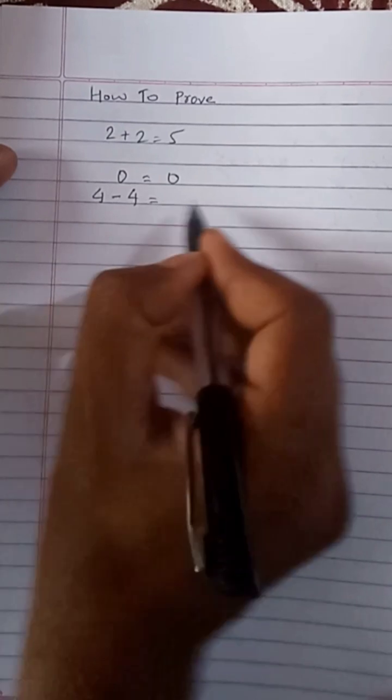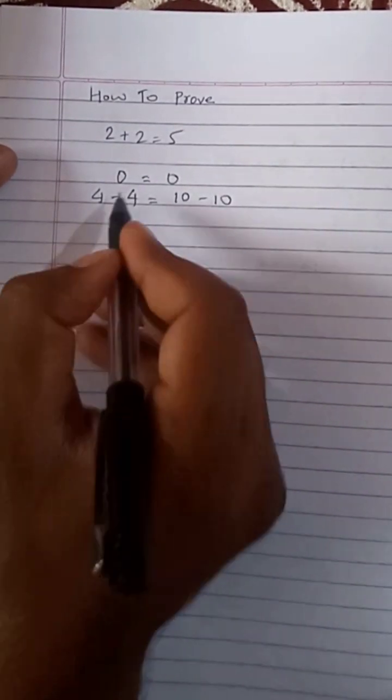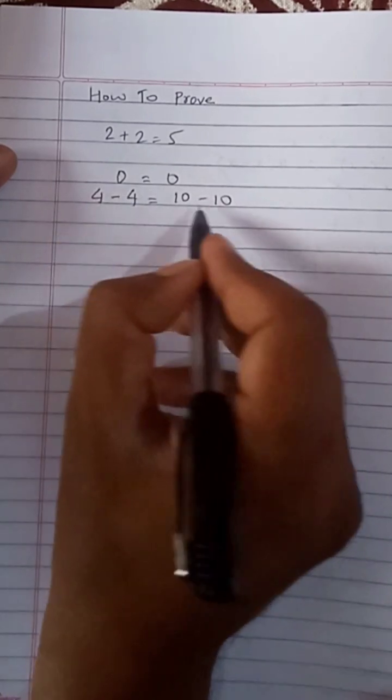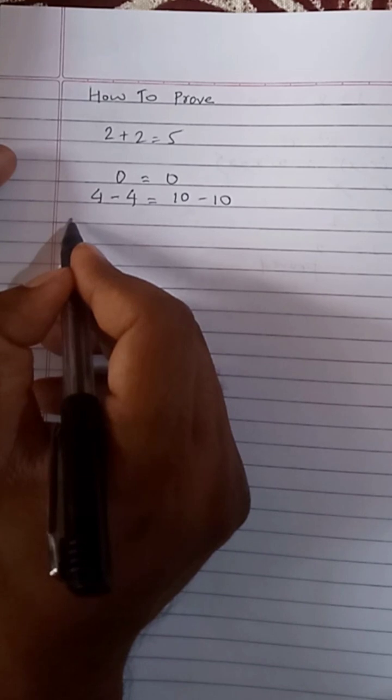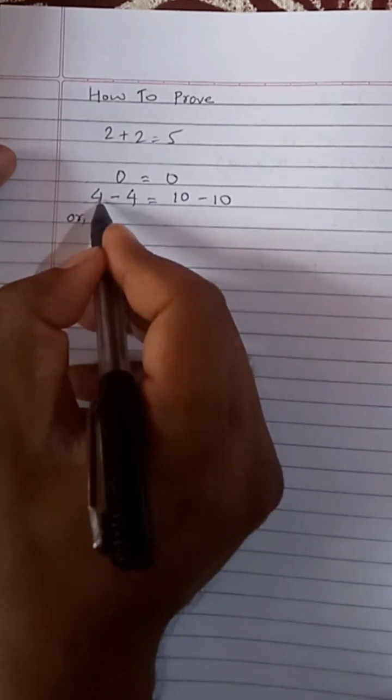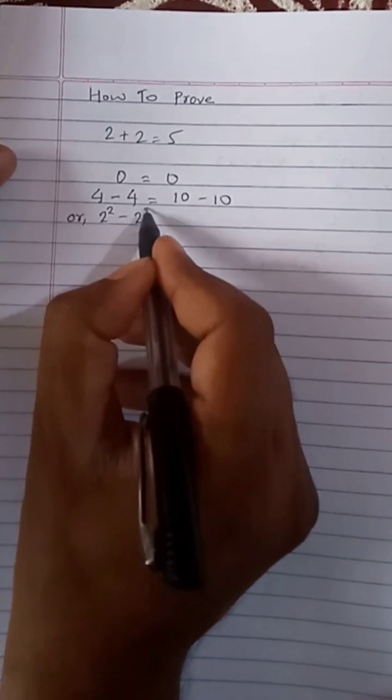4 minus 4 is equal to 10 minus 10, because 4 minus 4 is also equal to 0, and 10 minus 10 is also equal to 0. After that, we can write 4 as 2 squared minus 4 as 2 squared.